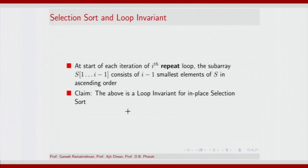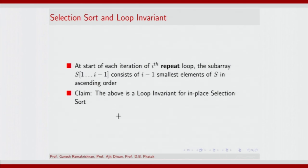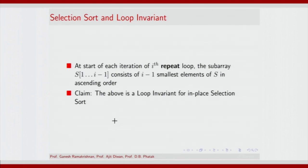Finally, termination: the loop invariant property entails that all elements from 1 to n−1 are sorted, and by virtue of the algorithm and swapping we know that the nth element must be greater than or equal to every other element in S. So the termination condition — S[1..n−1] is sorted — is sufficient to show the correctness of the selection sort algorithm.